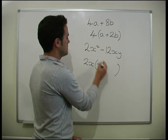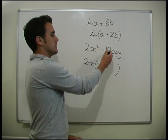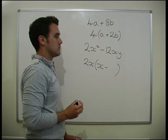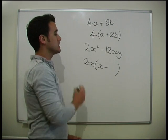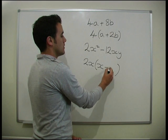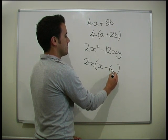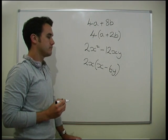We're going to minus. So, 2x times what equals minus 12xy? 2x times minus 6y.